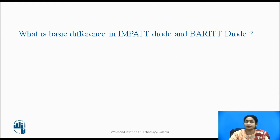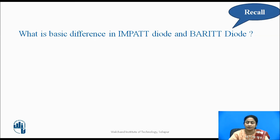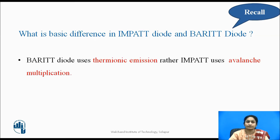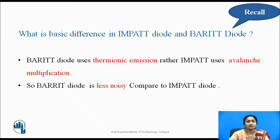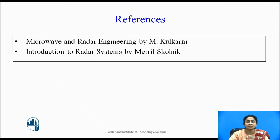The difference between the IMPATT diode and the BARITT diode: the BARITT diode uses thermionic emission, while the IMPATT diode uses avalanche multiplication. Therefore, the BARITT diode is less noisy compared to the IMPATT diode.